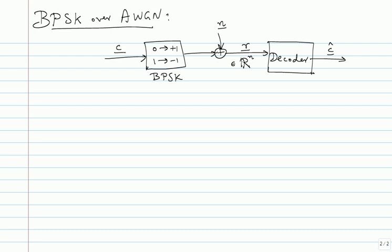We saw a couple of optimal soft decoders — the bitwise MAP and the maximum likelihood decoder. The maximum likelihood decoder correlates and picks the code word which gave you the maximum correlation; for BPSK AWGN you can say minimum Euclidean distance. The bitwise MAP decoder computes the probability that a particular bit equals 0 given the entire received vector R.